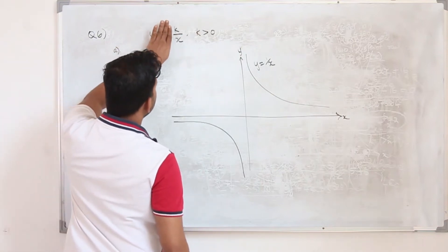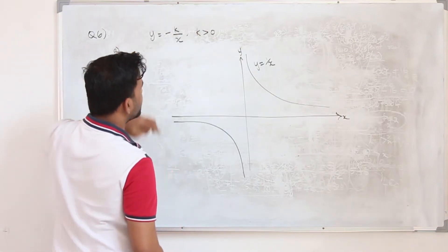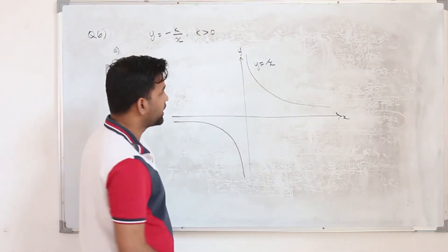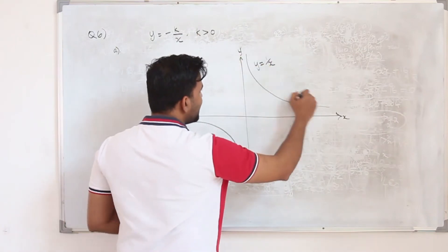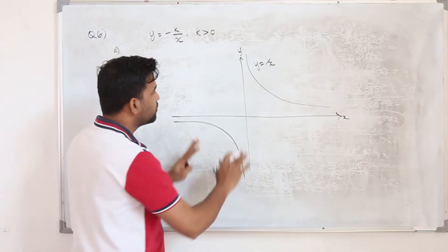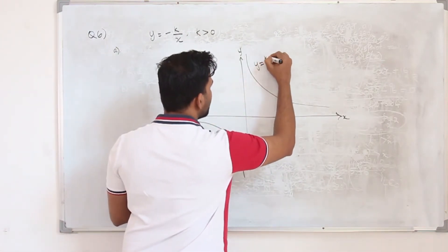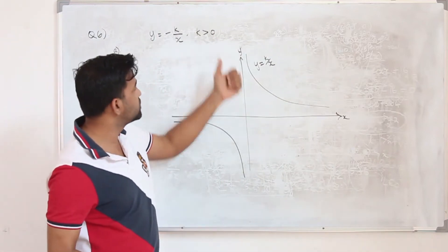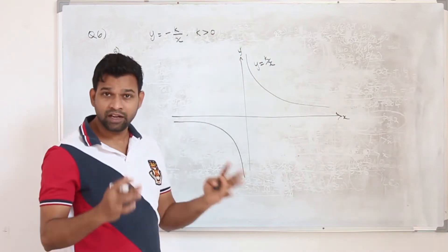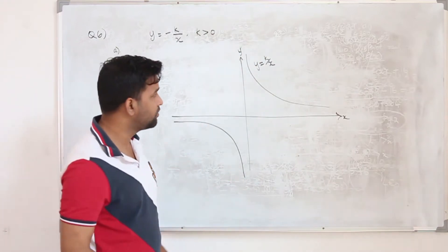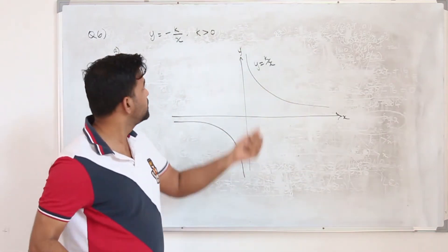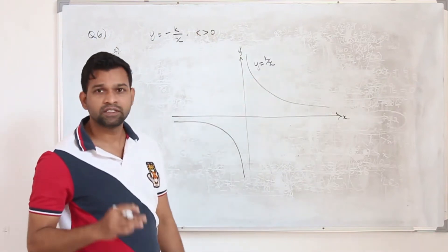Don't worry about the negative sign first. For k upon x, k is a positive number. When you sketch 2 upon x, the graph will be a little away from the origin — similarly 3 upon x, 4 upon x — but we don't know the value of k. So we consider the same graph as k upon x. All we know is k is a positive number, so we take this graph as k upon x.